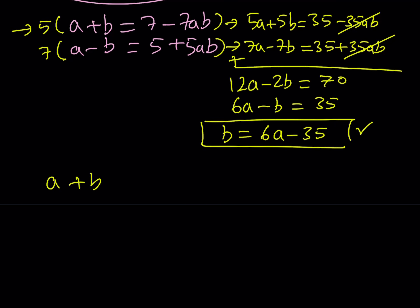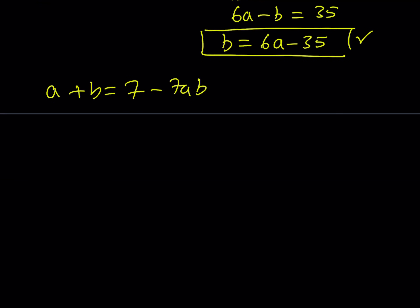Let's rewrite it: a plus b equals 7 minus 7ab. Now replace b with 6a minus 35 on the left-hand side as well as the right-hand side. This is going to give you an equation in a, and it is going to be quadratic. So 7a minus 35 equals 7 minus 42a squared, and that's a positive 245a.